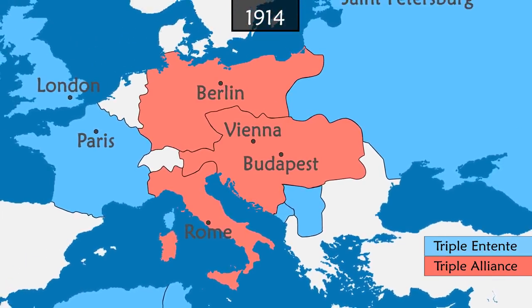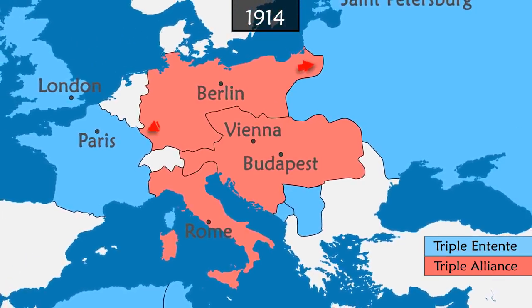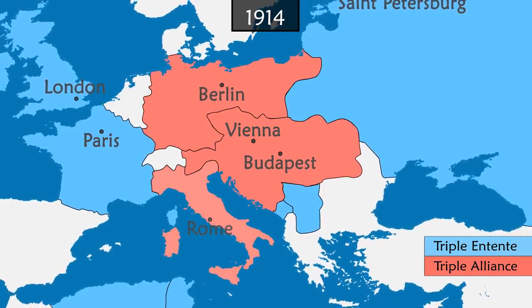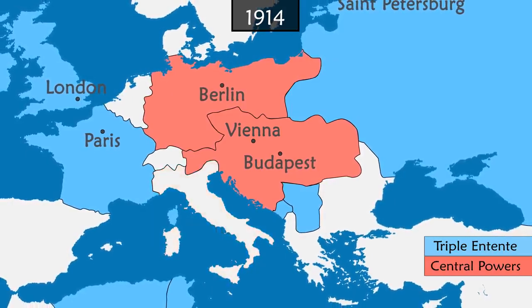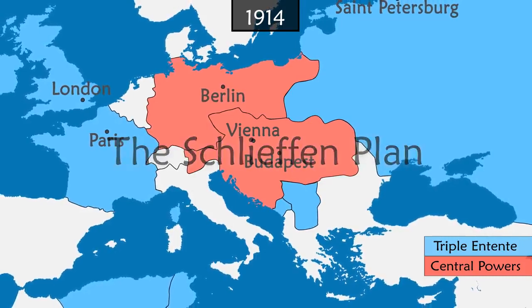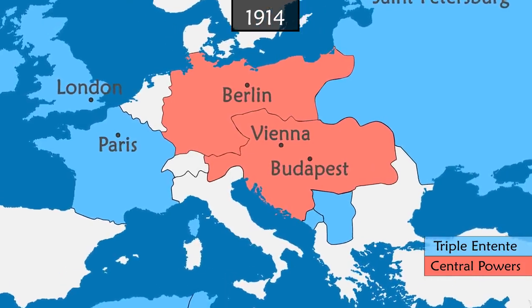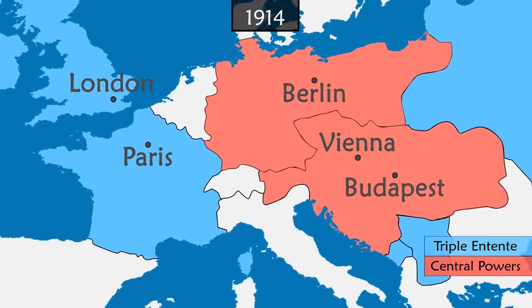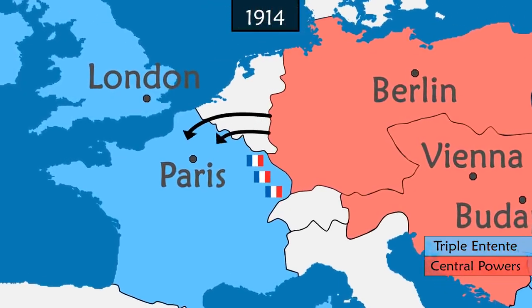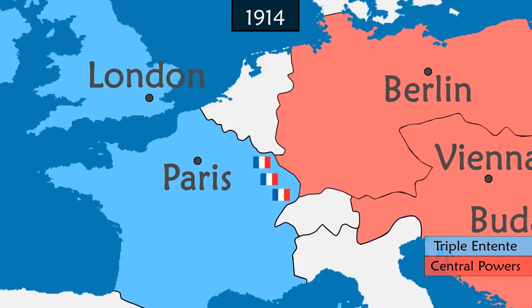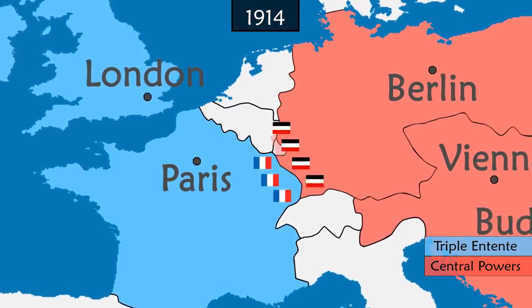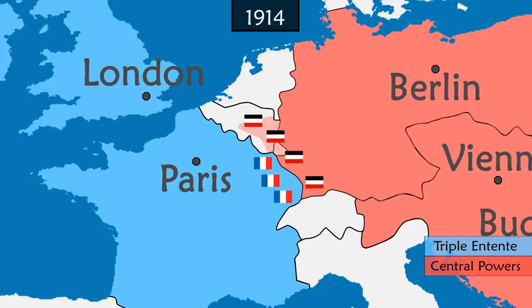In a few days, the conflict spreads between the countries of the Triple Entente and the Triple Alliance — only Italy remains neutral for the moment. The German plan is to overcome the French army, concentrated in the East, by planning an attack from the North. To achieve this, Germany invades Luxembourg and Belgium in violation of their neutrality.